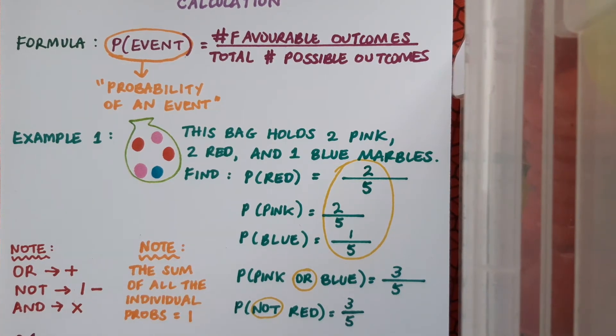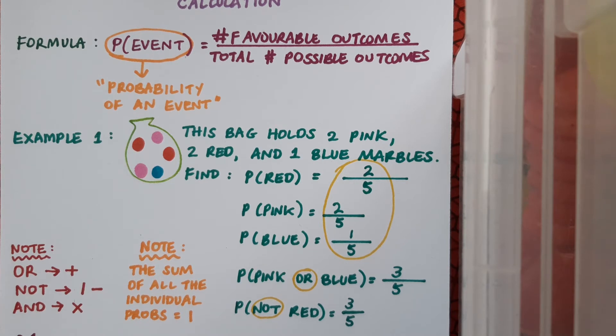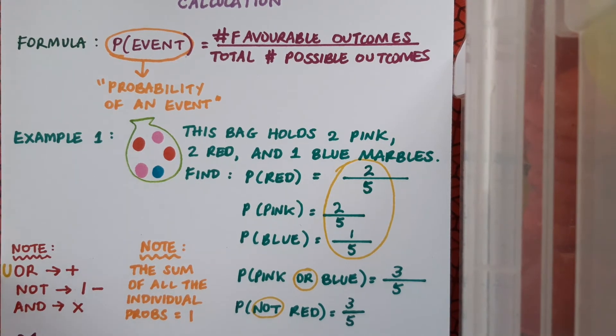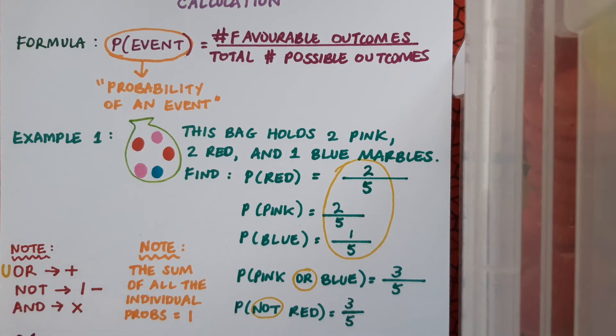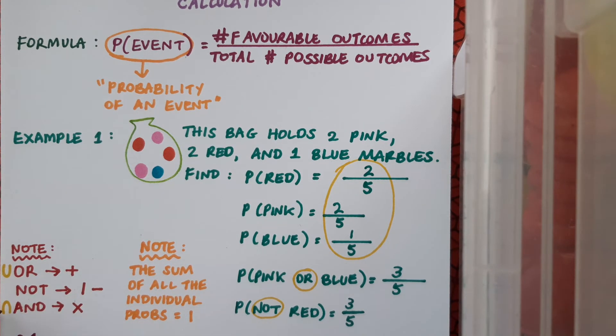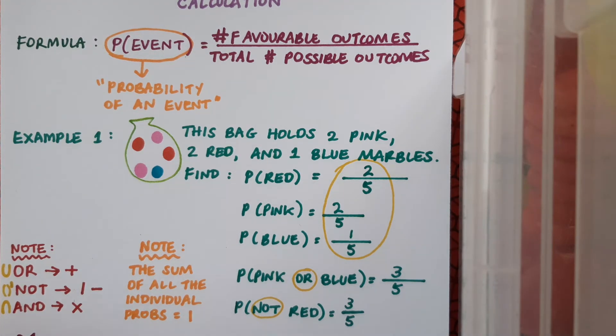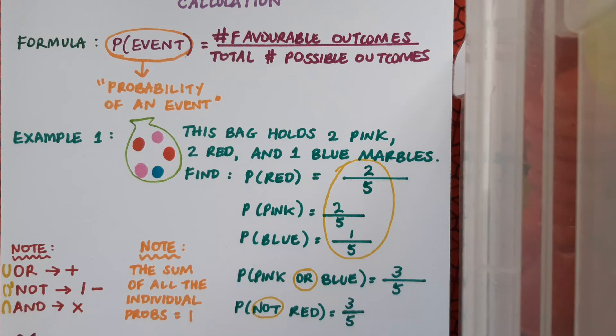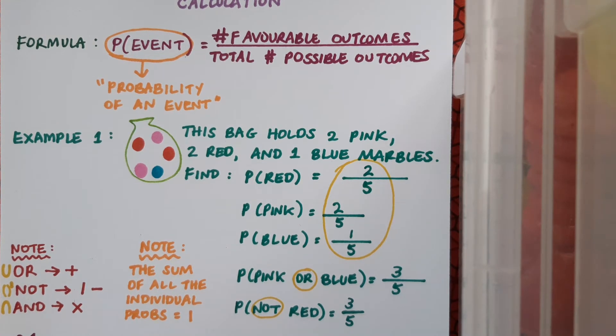Lastly, it's worth noting that we may sometimes see some set notation being used in probability questions. For example, we may see the union symbol to represent the word OR. We may see the intersection symbol with relation to AND, and we may see the complement symbol with relation to NOT. We can make use of these notations ourselves if we want to abbreviate a statement that we're trying to find the probability of.